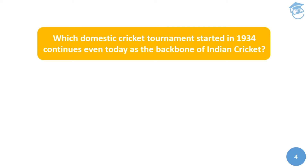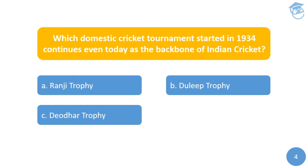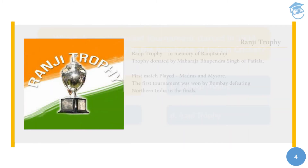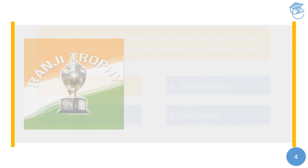Next question: which domestic cricket tournament started in 1934 continues even today as the Batman of Indian cricket? Your options are A) Ranji Trophy, B) Dilip Trophy, C) Deodhar Trophy, or D) Irani Trophy. The answer is the Ranji Trophy, which started in the memory of Kumar Shri Ranjitsinhji, donated by Maharaja Bhupinder Singh of Patiala. The first match was played between Madras and Mysore, and the tournament was held on 4th November 1934. Bombay became the first Ranji champion in 1934.